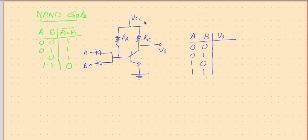Hi friends, welcome back. After looking into how a NOT gate can be implemented electronically through a transistor, now let us see what next we can implement. The next simple gate we can implement is a NAND gate. The NAND operation is shown in this truth table: only when both inputs are one, the output is going to be zero; for other cases it will be a one.